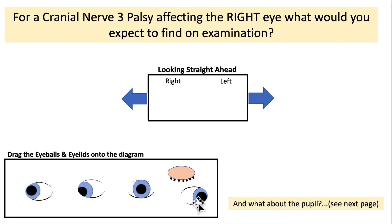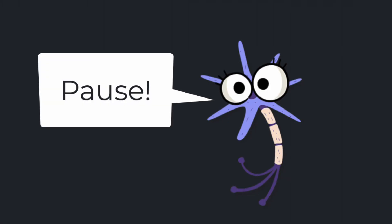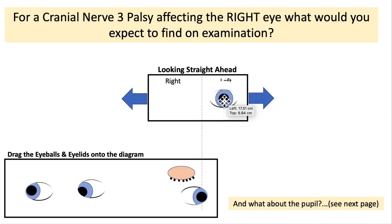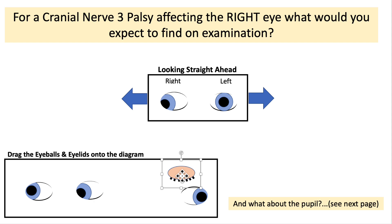You have a cranial nerve 3 palsy on the right eye. Complete this diagram by downloading it and dragging and dropping all the little eyeballs to their correct location, or just draw it out. Hit pause and do that now. The easiest place to start is by acknowledging that the fourth and sixth cranial nerves are still working, so they are going to be pulling this eye in their direction — out and down. So in the resting position looking straight ahead, we have this down-and-out appearance to the right eye affected by the cranial nerve 3 palsy.